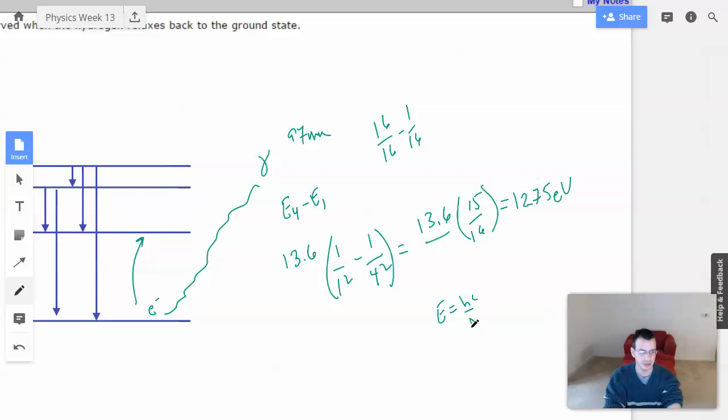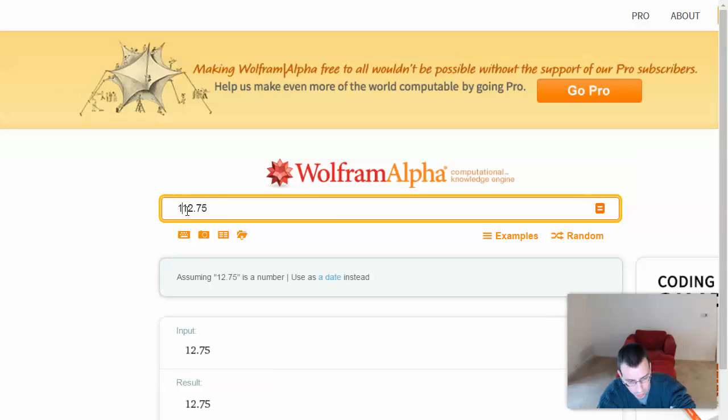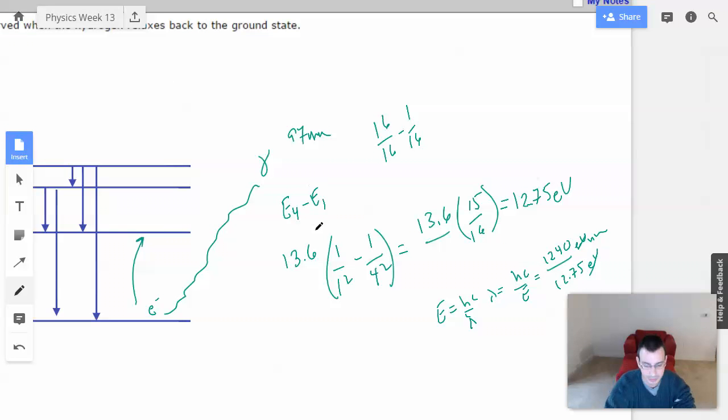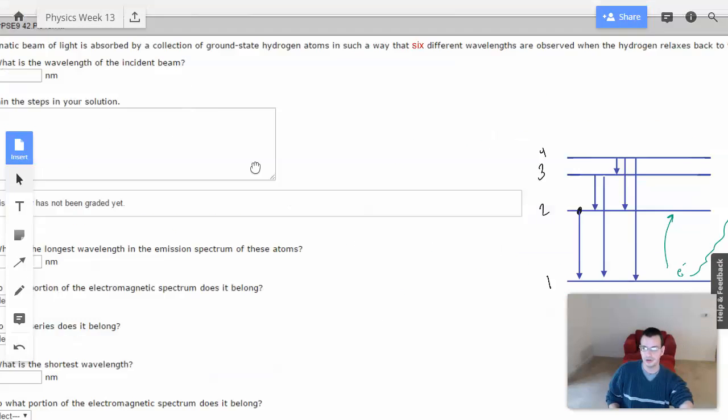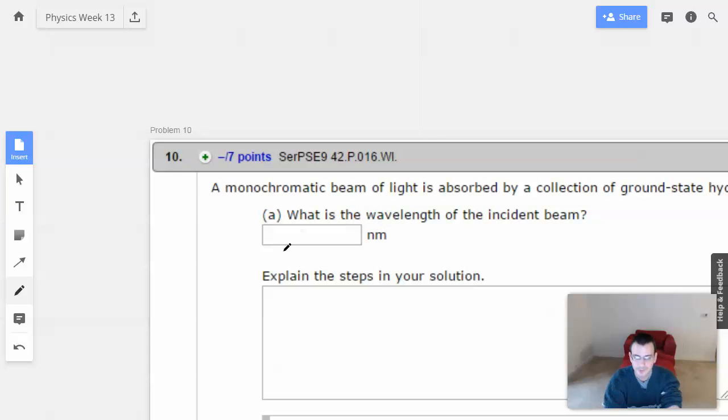So energy equals HC over lambda. Lambda equals HC over E. Which is 1240 electron volt nanometers over 12.75 electron volts. Cancel, cancel, cancel. 1240 divided by this gives me 97.25. Okay, bam, so true. Yes, I concur. So 97 nanometers, 97.25, because I calculated it out, and I'm proud of that.